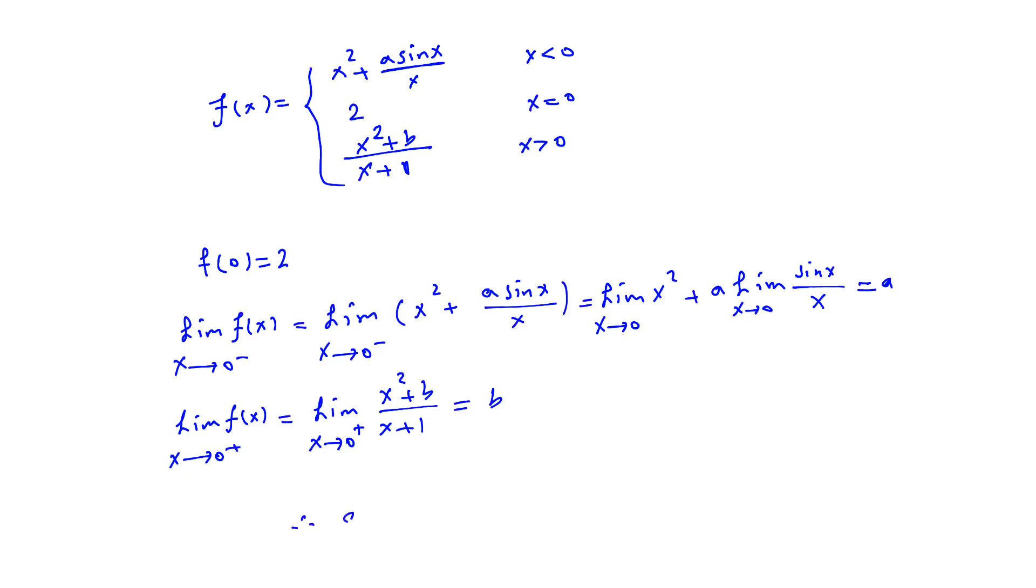Therefore, a and b both must equal 2. By definition of continuity, the right side limit, left side limit, and the value of the function must be the same if the function is continuous at that point.